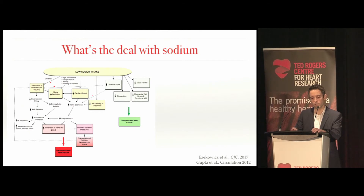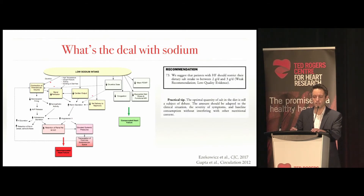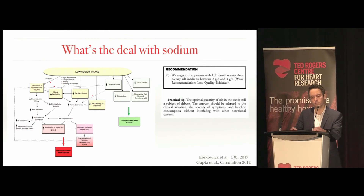If you look at empiric data, unfortunately patients suffering with advanced heart failure tend to develop cardiac cachexia — their appetite disappears and they end up taking in less sodium. That obviously confounds the data when you're looking at prognosis and sodium diets. If you look at the Canadian guidelines, they do suggest a 2 to 3 gram sodium diet, a sodium-restricted diet. But in the footnotes, they say that the optimum quantity of salt in the diet is still a subject of great debate.